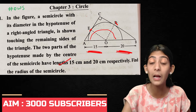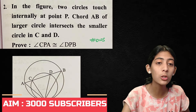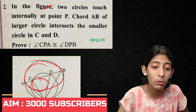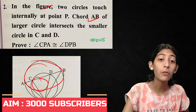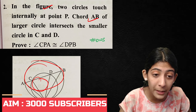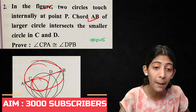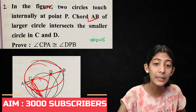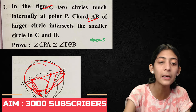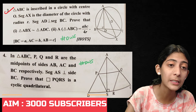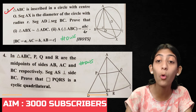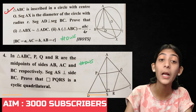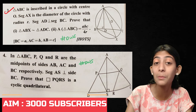Second question: In the figure, two circles touch internally at point P. The larger circle intersects the smaller circle at points C and D. We need to prove that segment ABX is similar to triangle ADC.